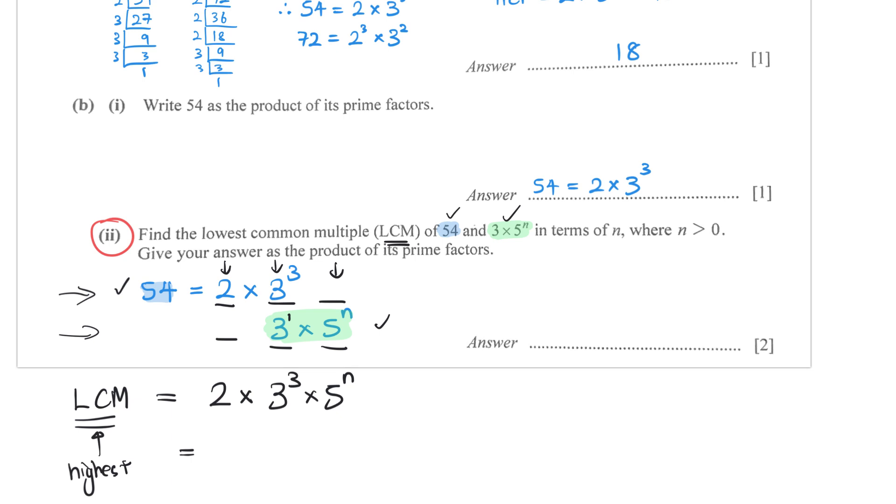Since they want the answer to be the product of its prime factors, I do not need to multiply anything out actually, and this is the final answer. The lowest common multiple is 2 times 3 cube times 5 to the power of n, where n is a number bigger than 0. And we are done.